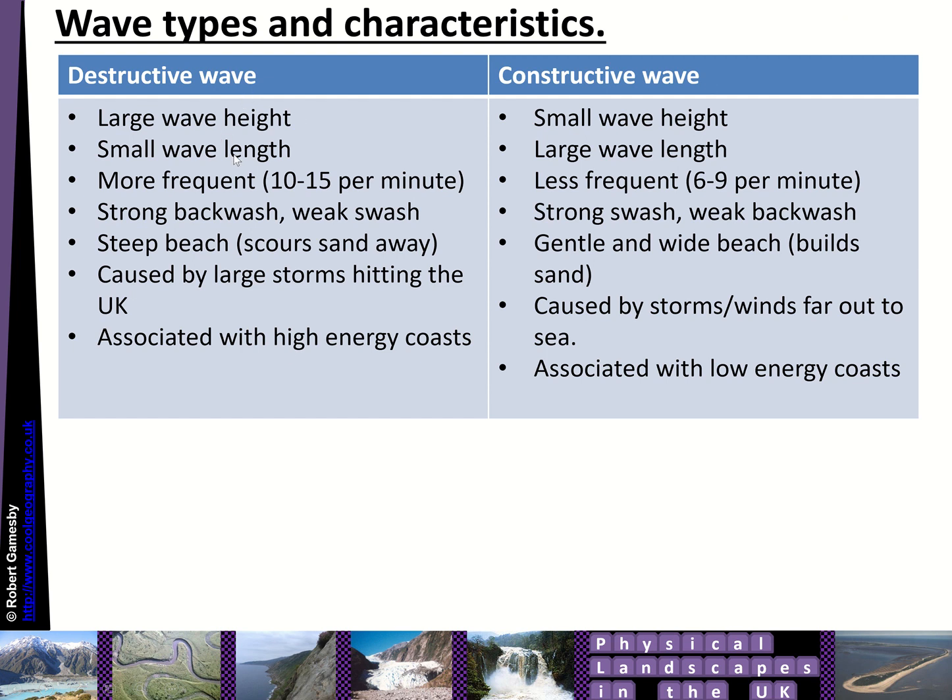So the little summary there: destructive waves have large wave heights, small wavelength, more frequent, strong backwash and a weak swash. They create steep beaches caused by large storms hitting the UK and often associated with high energy coasts.